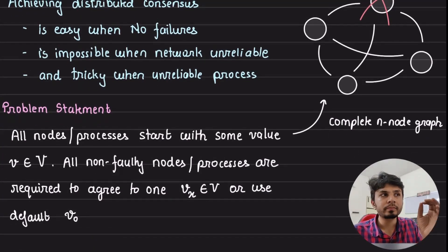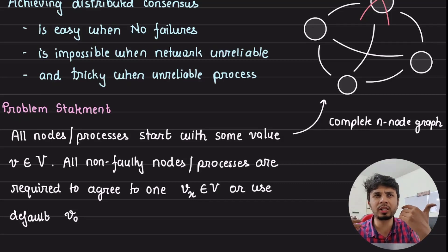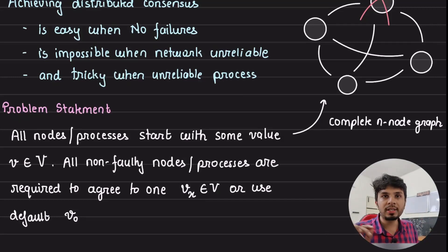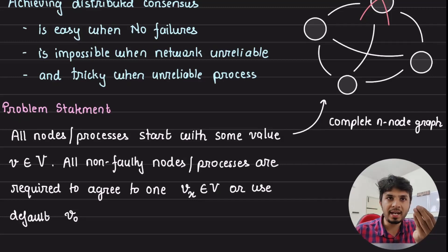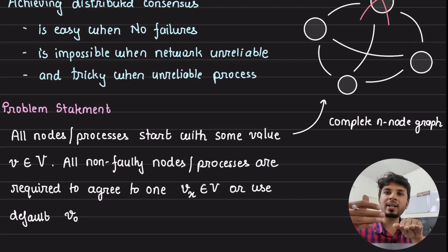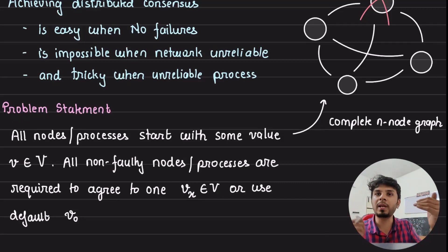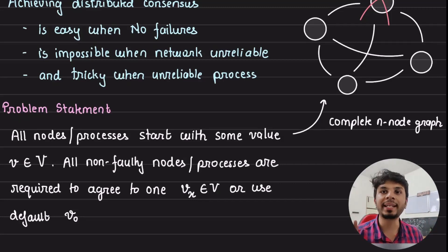Formally, we have a complete n-node graph, meaning every node knows about the existence of every other node — a classic database cluster is a good example, with 10, 15, or 20 nodes all aware of each other. All nodes start with some value; for example, every node knows the value of price it believes is correct and they're all trying to reach consensus on the final value. Maybe the old value was 100 and everyone's trying to update to either 1000 or 2000 — the default value would be 100. The problem statement is generic enough to apply to hundreds of use cases.